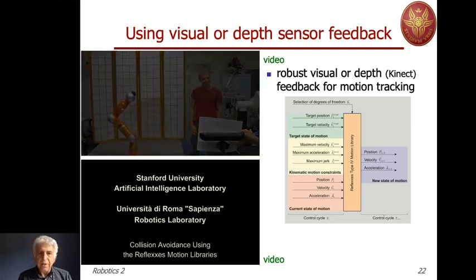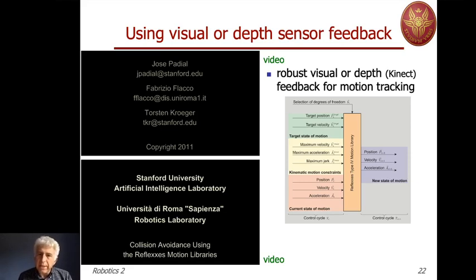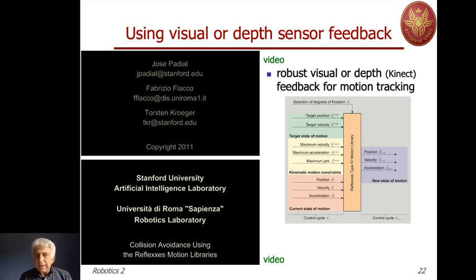If you stop the depth sensor, you don't see anything. All this sensor information is used to generate motion. In those experiments, a library called the Reflex Motion Library is being used, where you process all kinematic information and available constraints — maximum joint velocity, maximum acceleration, maximum jerk, current position and velocity, and the desired ones. You filter this to generate new states in terms of position, velocity, and desired acceleration.